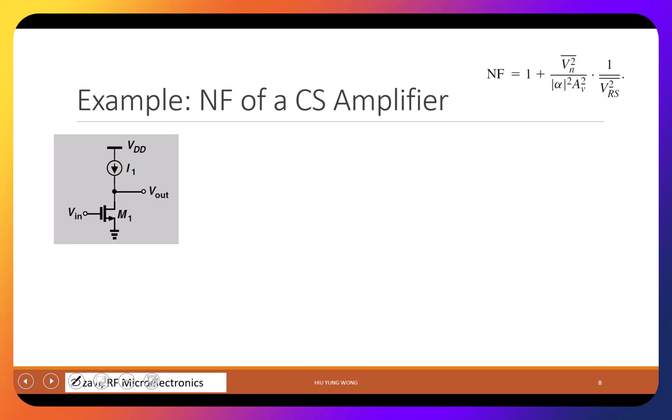Let's look at the common source amplifier. If you're not familiar with it, check my earlier video. Last time we talked about common gate. Here we have the gate, drain, and source — the source is grounded, that's why it's called common source. The input is at the gate, the output is at the drain.